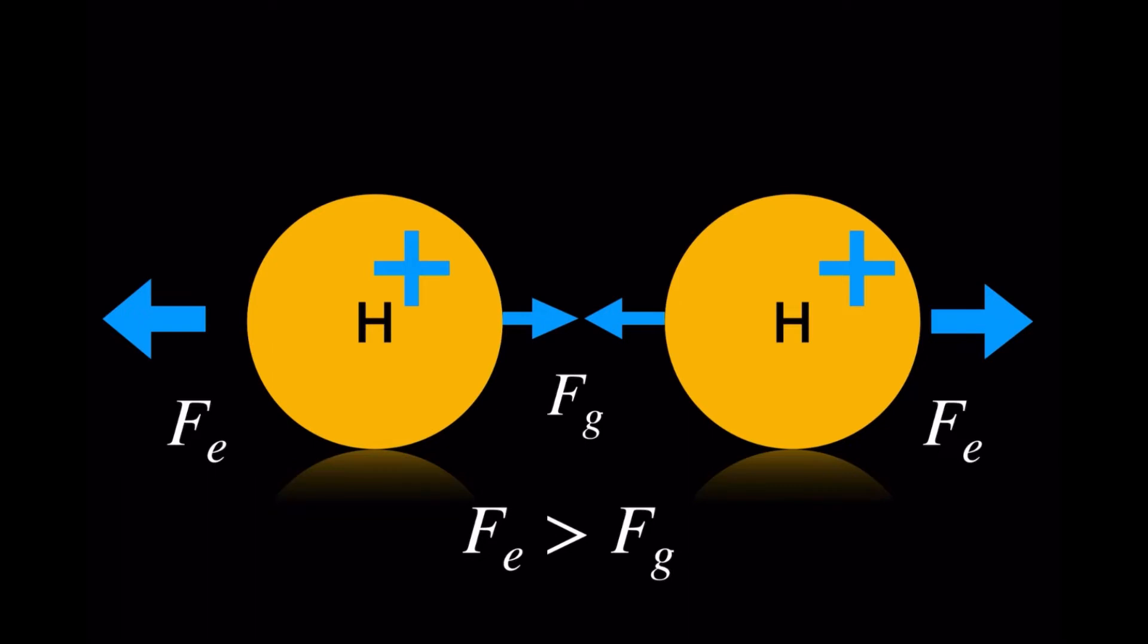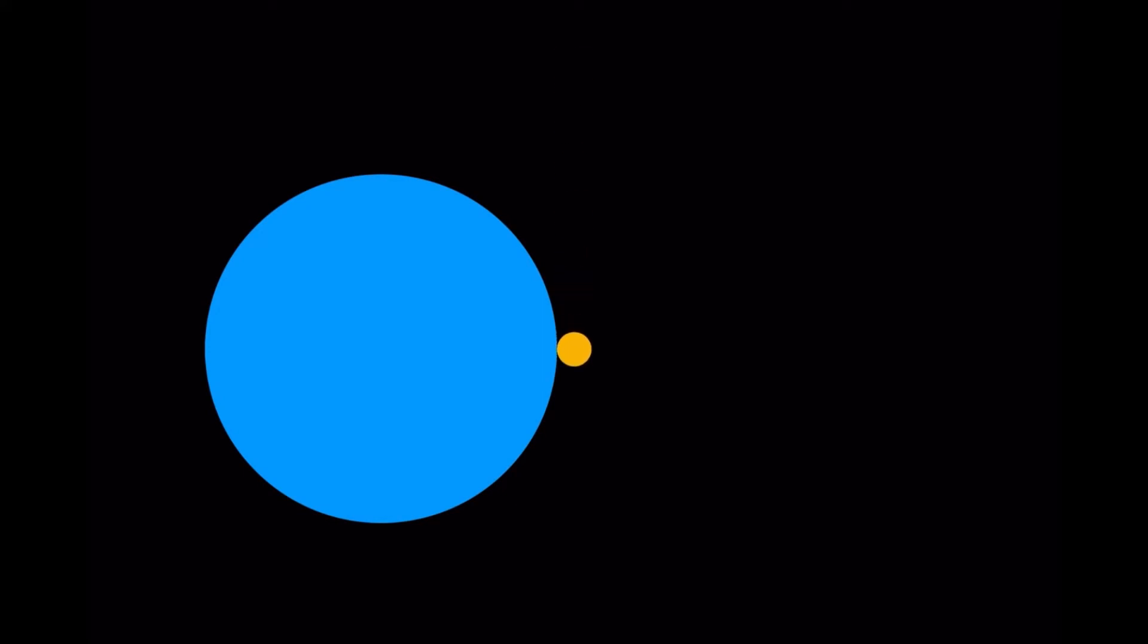When the electrostatic force is greater than the force of gravity, expansion will start. The thing is we're not talking about just two hydrogen atoms - we're talking about a universe, a sphere of radius R having numerous hydrogen atoms. I'm taking one hydrogen atom at the radius at the end of the universe and observing its movement. When the electrostatic force is greater than the attractive gravitational force, the universe will expand.